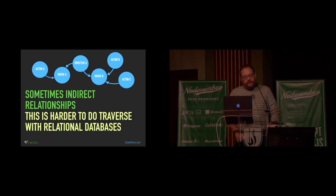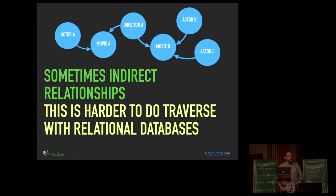Sometimes you have indirect relationships, though — actor A is related to actor C, but not directly, only indirectly. These kinds of indirect relationships are harder to traverse with relational databases, to jump across these things and find relationships where there's not a direct connection. Oftentimes you have to do joins upon joins upon joins. Often the solution for speed's sake is to denormalize and end up having to maintain data in multiple places, which introduces redundancy. It works, but it's complex and hard with a lot of challenges.